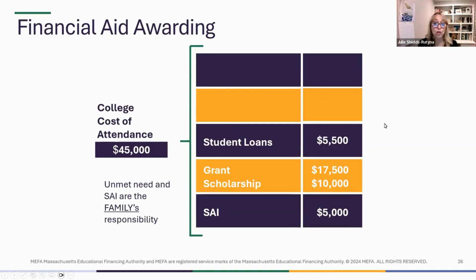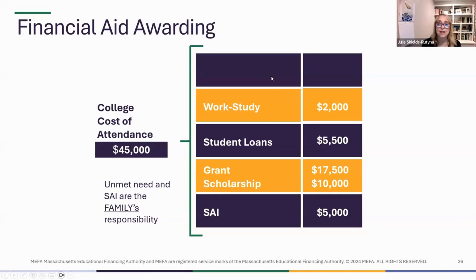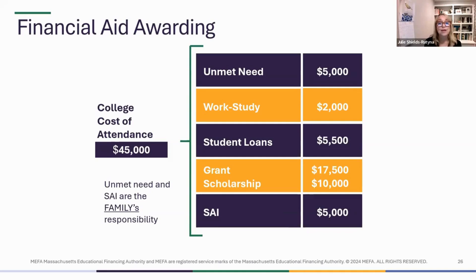I'd award a student loan of $5,500 — the freshman maximum — and a work-study allotment of $2,000, allowing the student to work on campus and earn money for miscellaneous book and transportation expenses. That's all this college can do; we're not a college that can meet the full need. As a family, you'd need to come up with the $5,000 Student Aid Index and $5,000 of unmet need to ensure your student could attend.